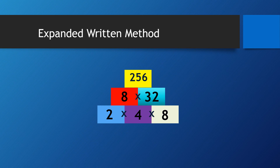Now expanded written method also. What if there is a question asking you to take 2 times 4, and then times 8? Just take 2 times 4 first. Two times 4 is 8, write the answer. Now take 4 times 8: four times 8 is 32, write it here. Now take 8 — you times with 32. Use expanded written method to find the answer: 32 times 8 gives you 256.